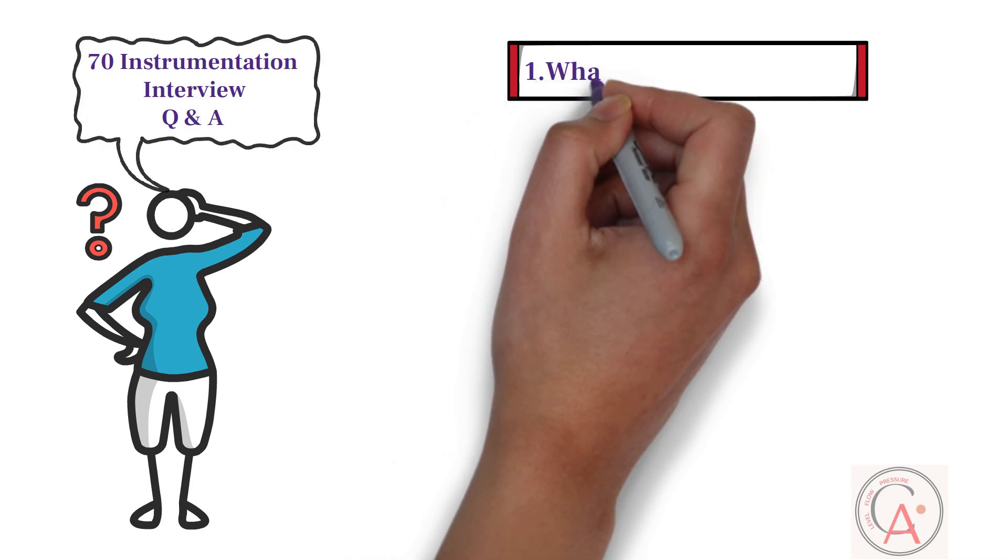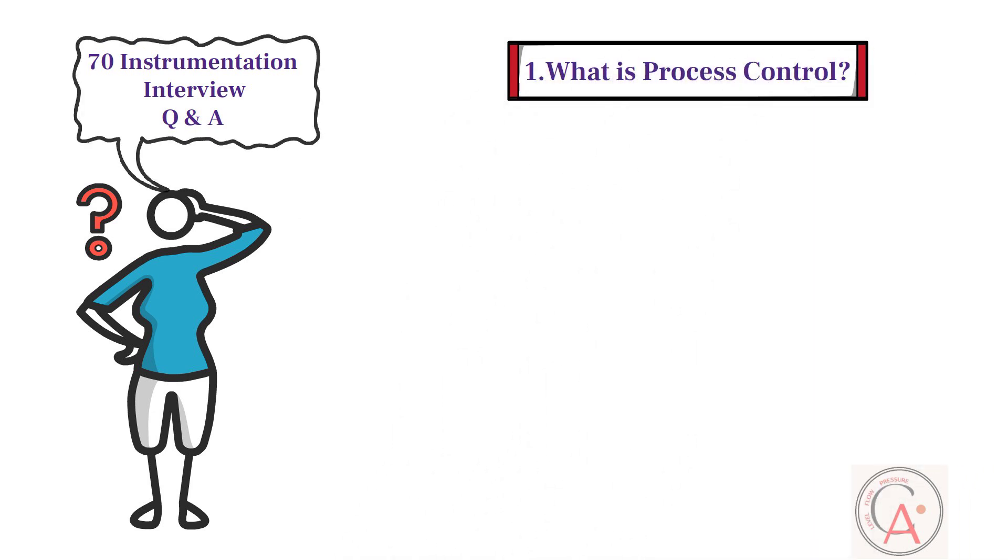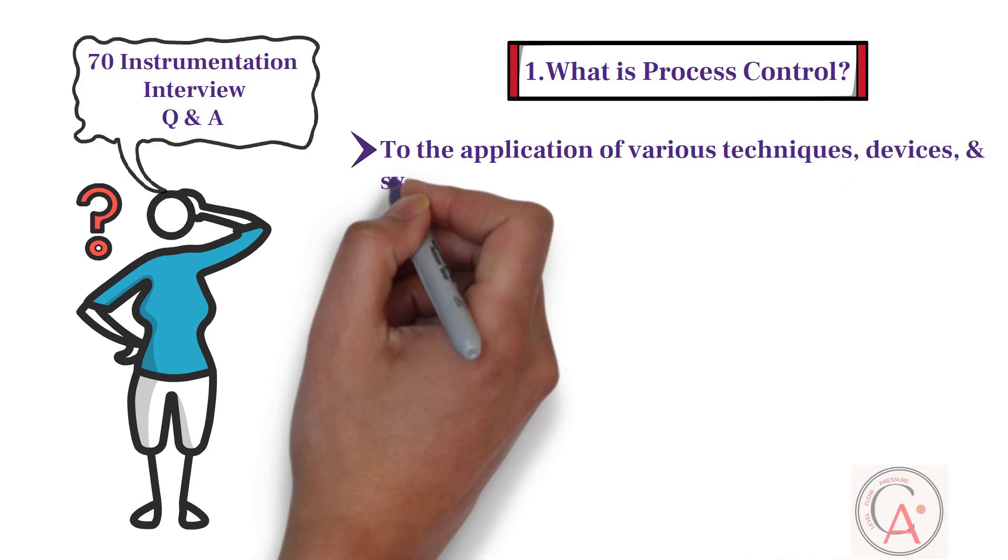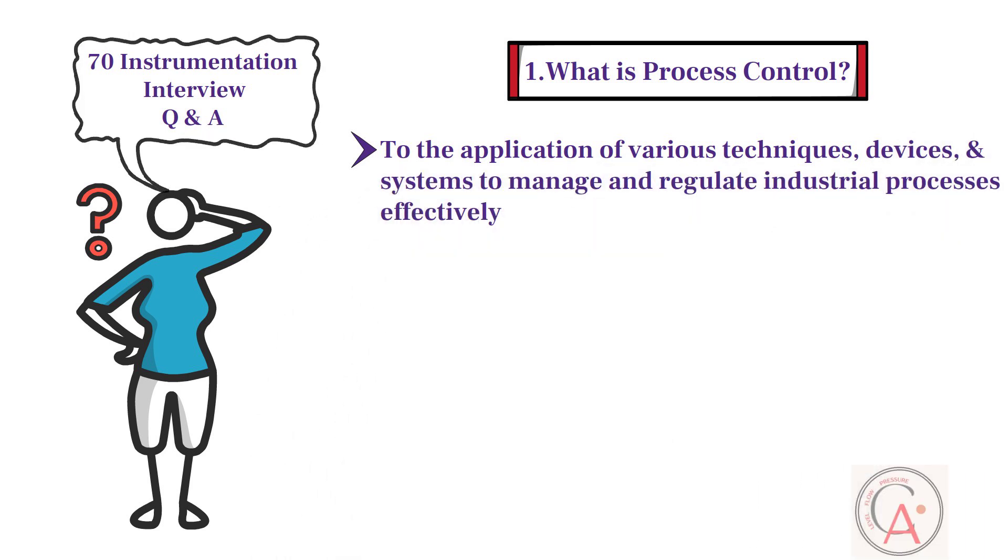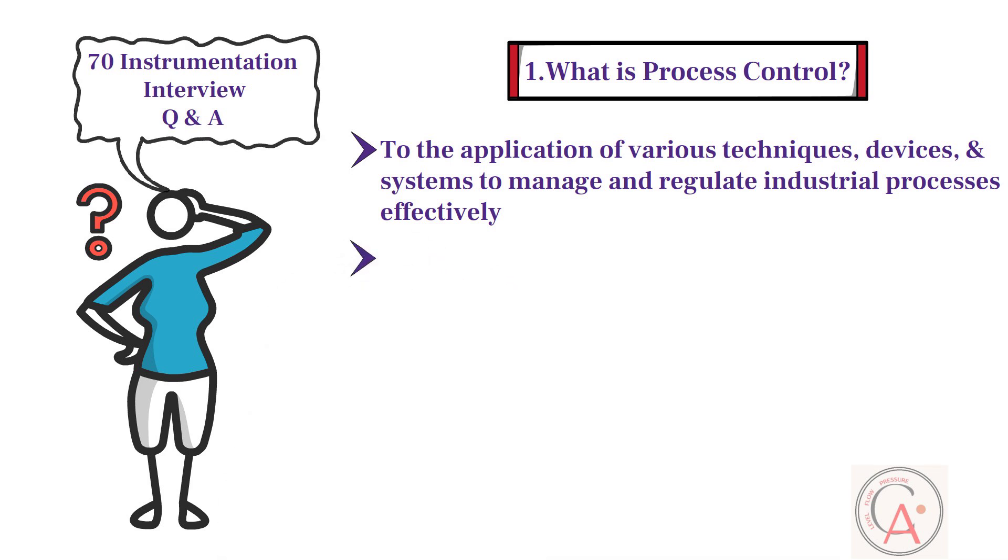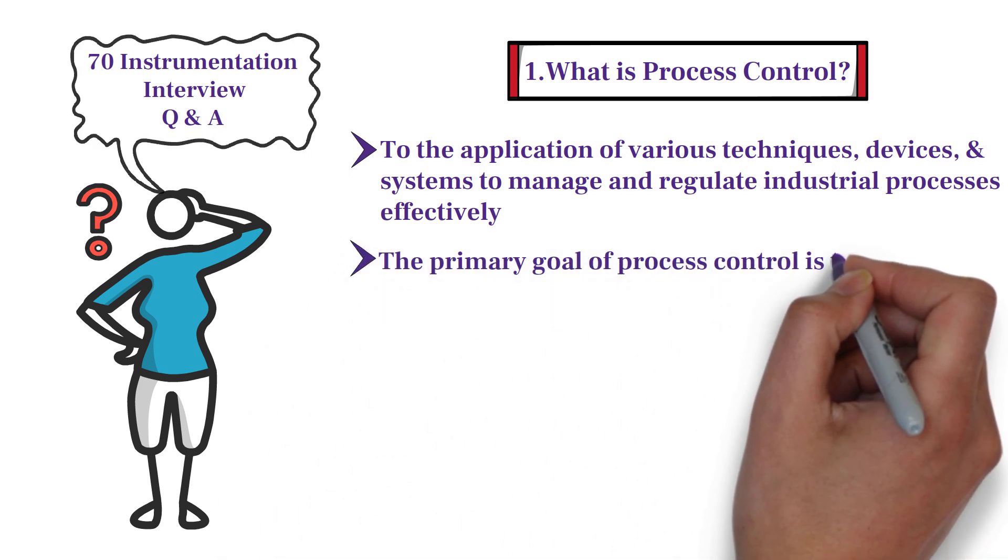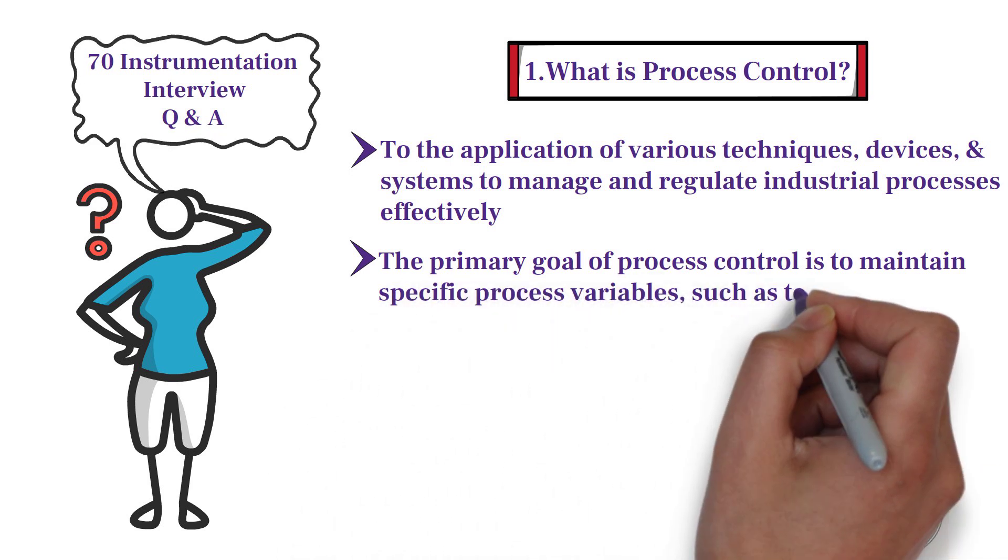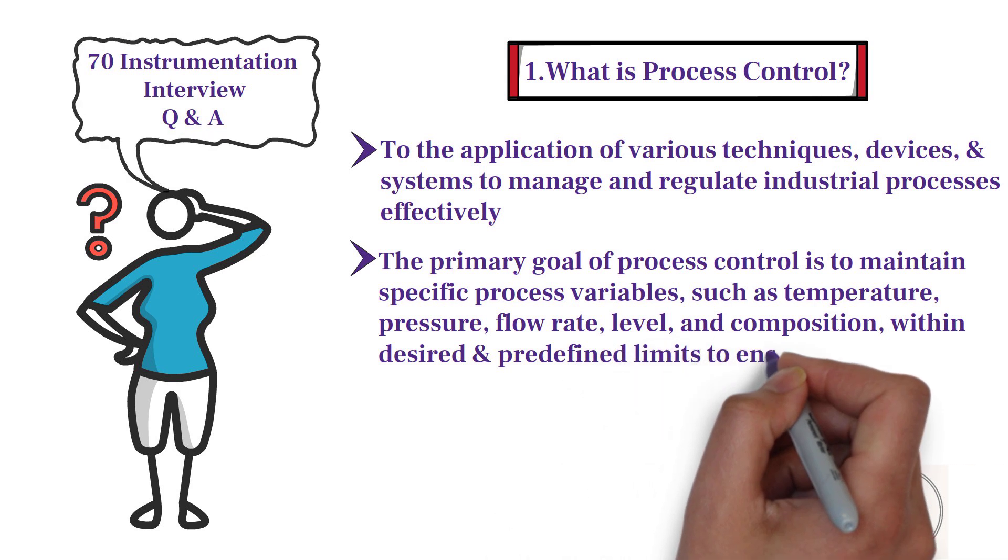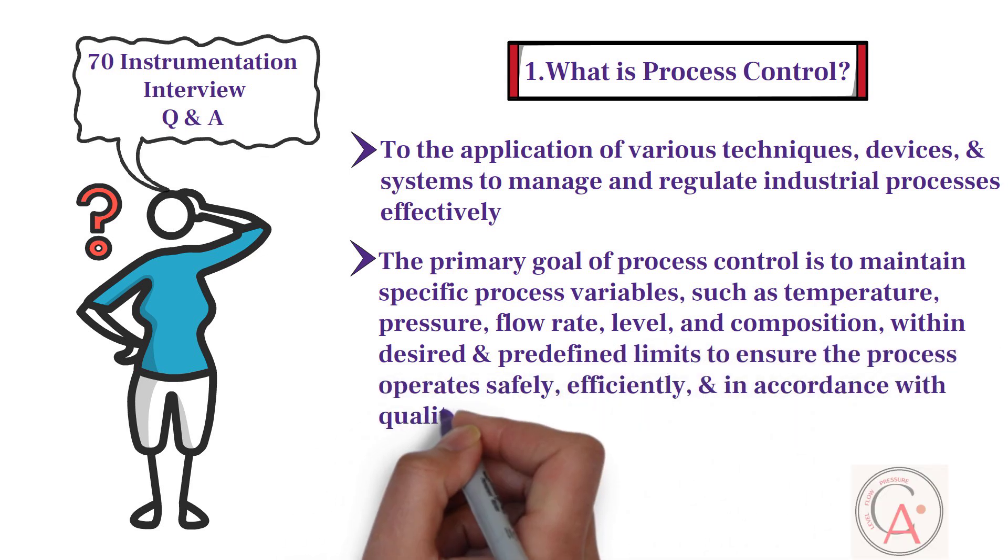The first question is, what is process control? Process control in instrumentation refers to the application of various techniques, devices, and systems to manage and regulate industrial processes effectively. The primary goal of process control is to maintain specific process variables, such as temperature, pressure, flow rate, level, and composition, within desired and predefined limits to ensure the process operates safely, efficiently, and in accordance with quality standards.